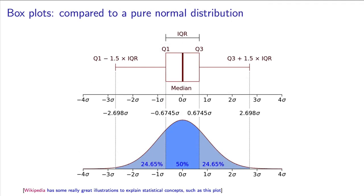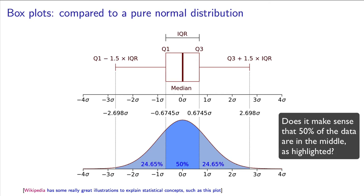It is useful to consider what the box plot would look like for a vector of data that came exactly from the normal distribution. Real data are almost never this nicely balanced.